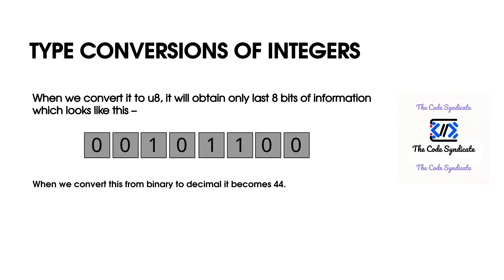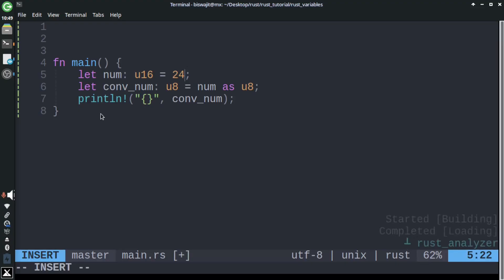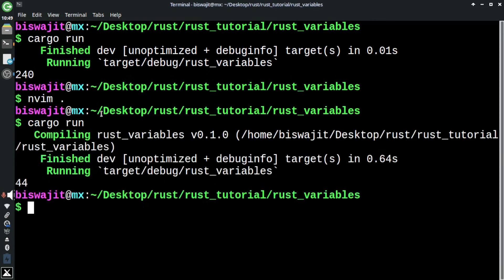Let's see this in code and verify it. Change this 240 to 300. Run the code. And here it is. We got 44 in the output.